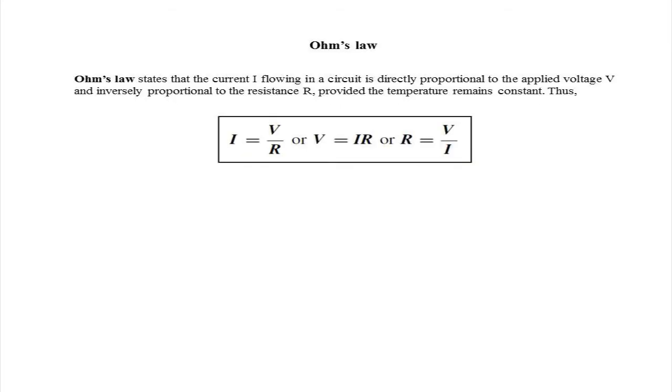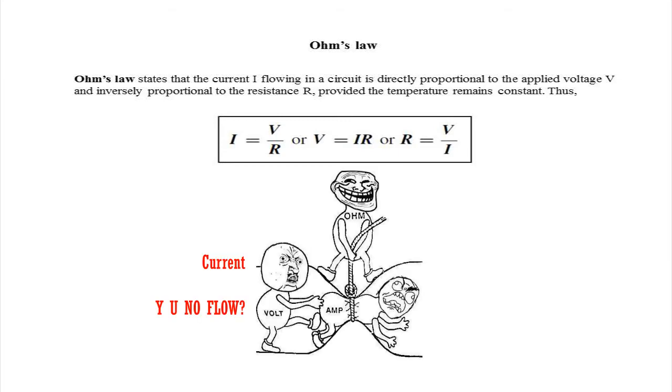Ohm's law states that the current I flowing in a circuit is directly proportional to the applied voltage V and inversely proportional to the resistance R, provided the temperature remains constant. Thus, the current is equal to the voltage divided by resistance, or the voltage is equal to the current times resistance, or resistance equals voltage divided by current.